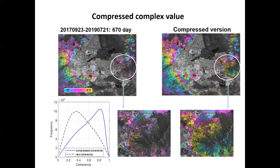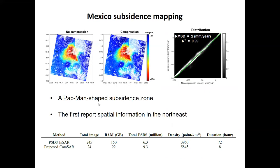We processed 240 images from 2015 to 2020 of Sentinel-1, satellite track 143, using combined interferometric compression and CAMSAR techniques. For the CAMSAR, we set a small batch of 10, resulting in 24 isolated small batches.